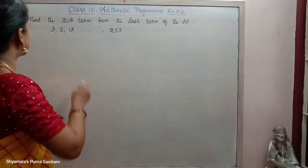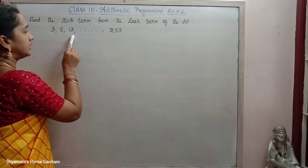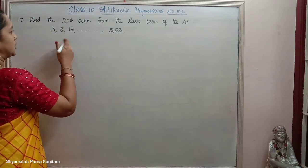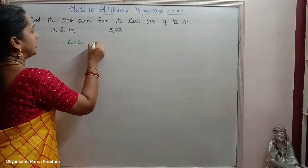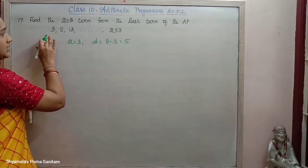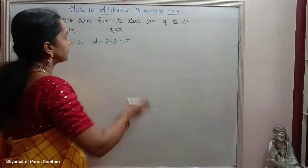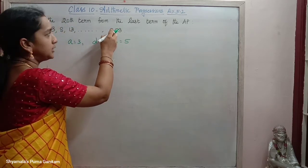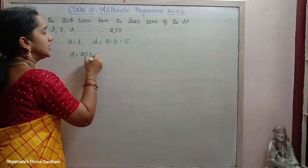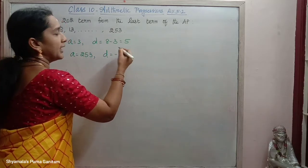Next problem: Find the 20th term from the last term of the AP 3, 8, 13, ... where the last term is 253. A is 3 and D is 8 minus 3, equal to 5. Since we are finding from the last term, A becomes 253 and D becomes minus 5.